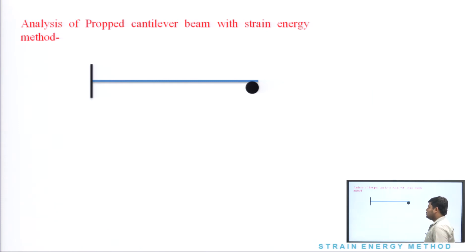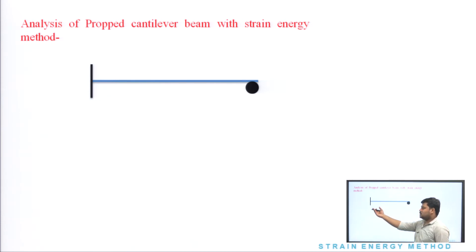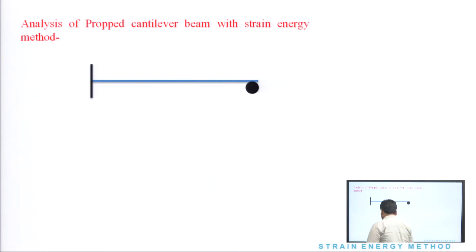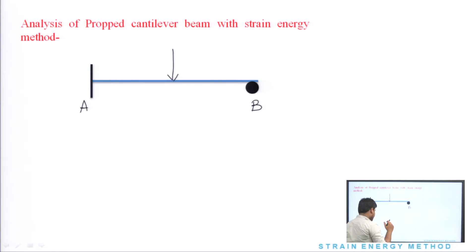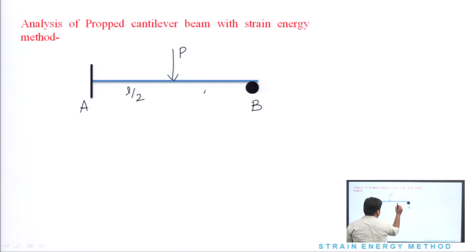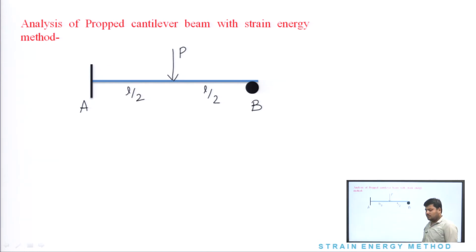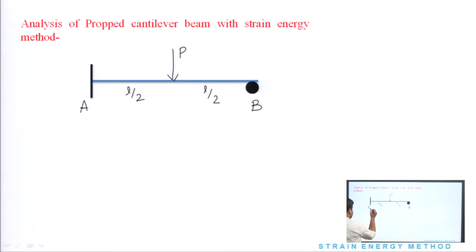This is a propped cantilever beam in which we will calculate the reactions. Sabse pehle load condition apply karte hain. Hum maante hain ki this point is B — the fixed end — and a load P which is acting at the center of the propped cantilever beam. Now, hum RC nikalne ja rahe hain, toh hum strain energy ki baat karte hain. Strain energy basically, P lag raha hai.